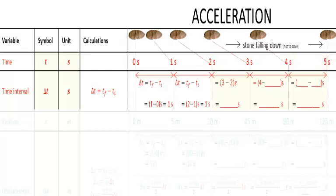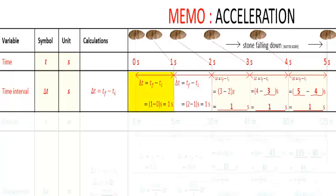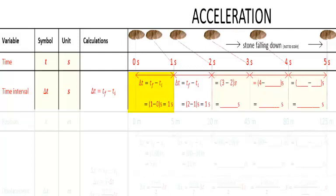Now what about time interval? We can calculate time interval with the equation delta T equals T final minus T initial. For this interval here, the final time is 1 second. The initial time is 0 second. So the time elapsed,